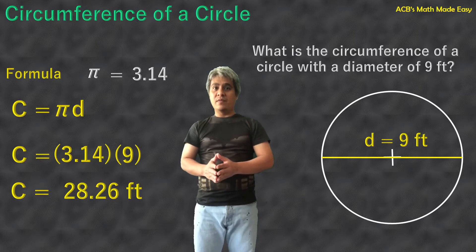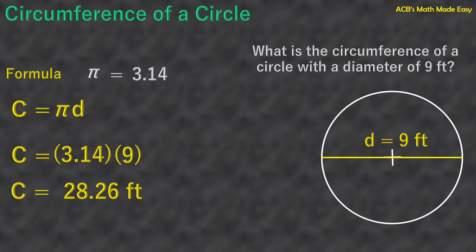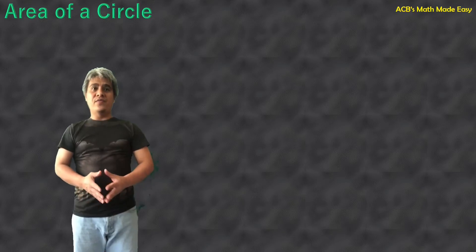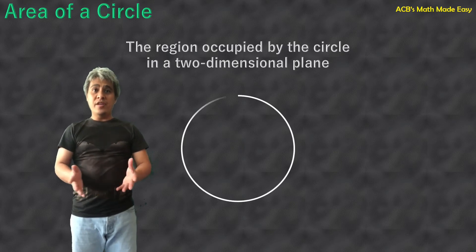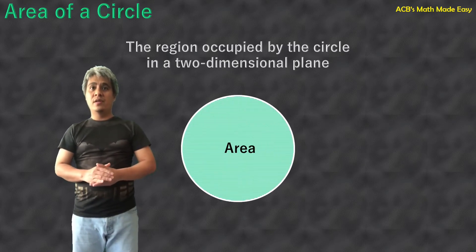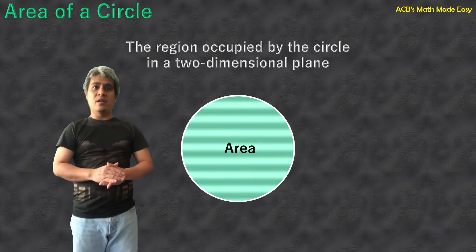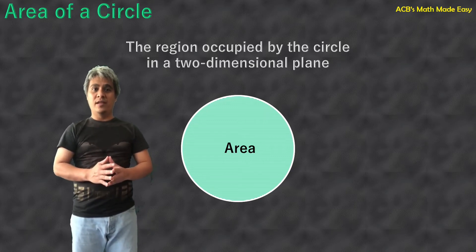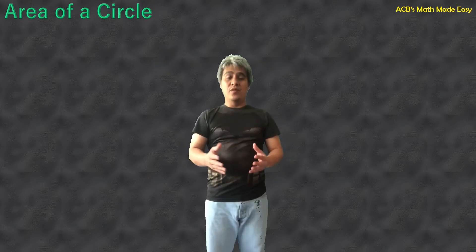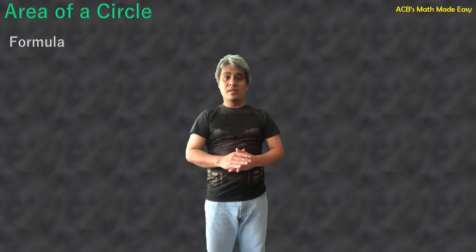The next topic is about the area of a circle. Let's define first the meaning of the area of the circle. Area is the region occupied by the circle in a two-dimensional plane. To get the area of a circle, the formula is A equals pi r squared.